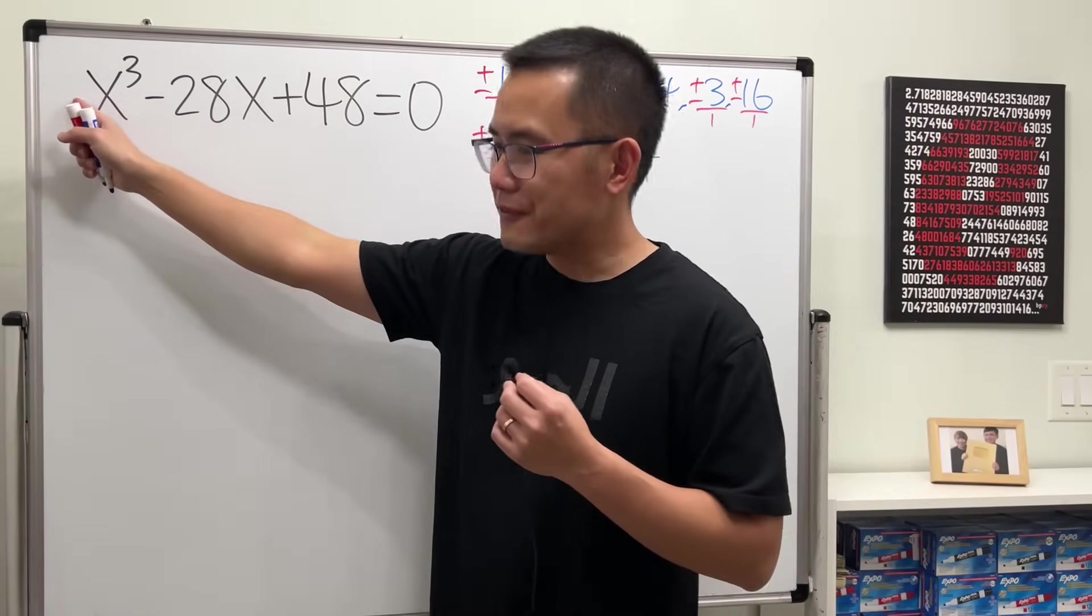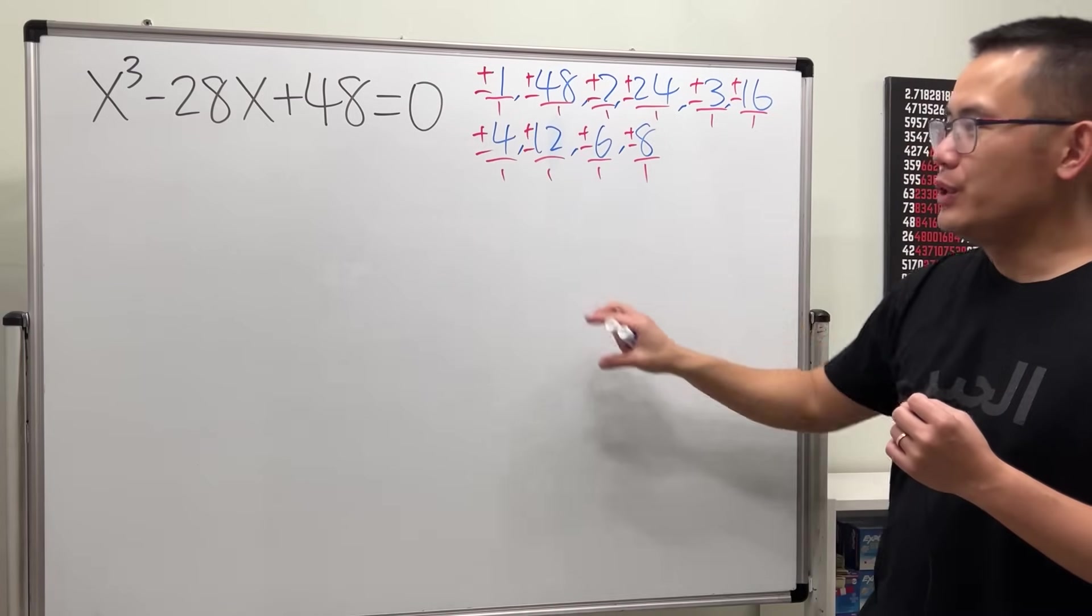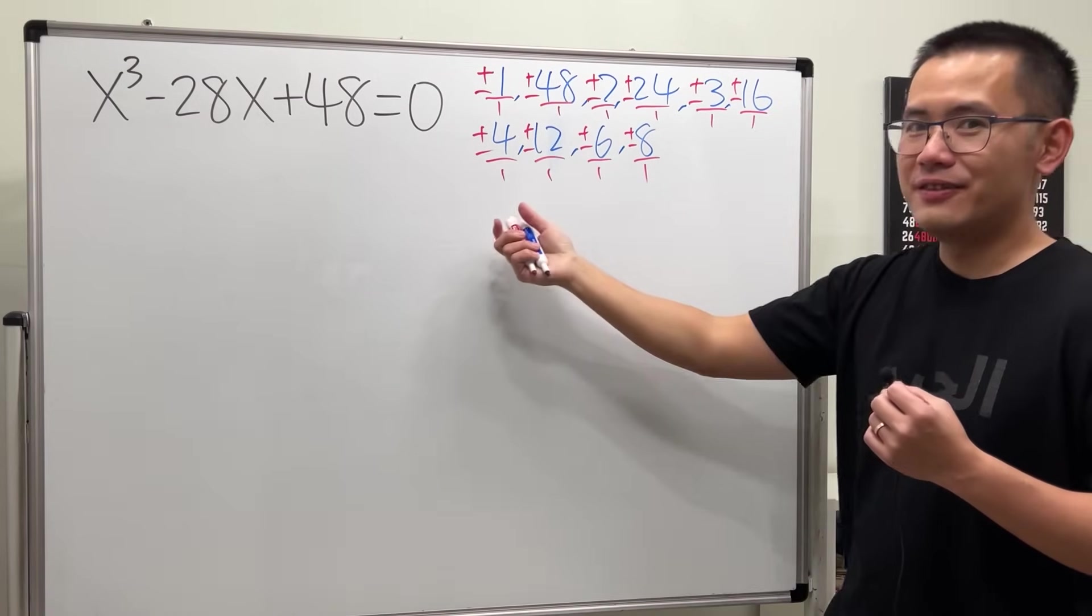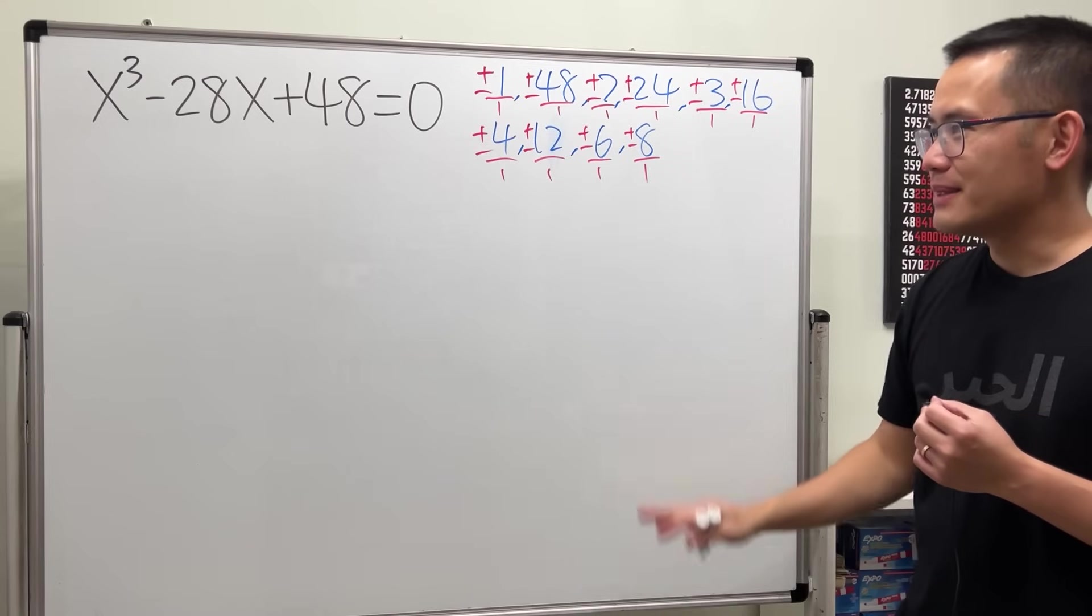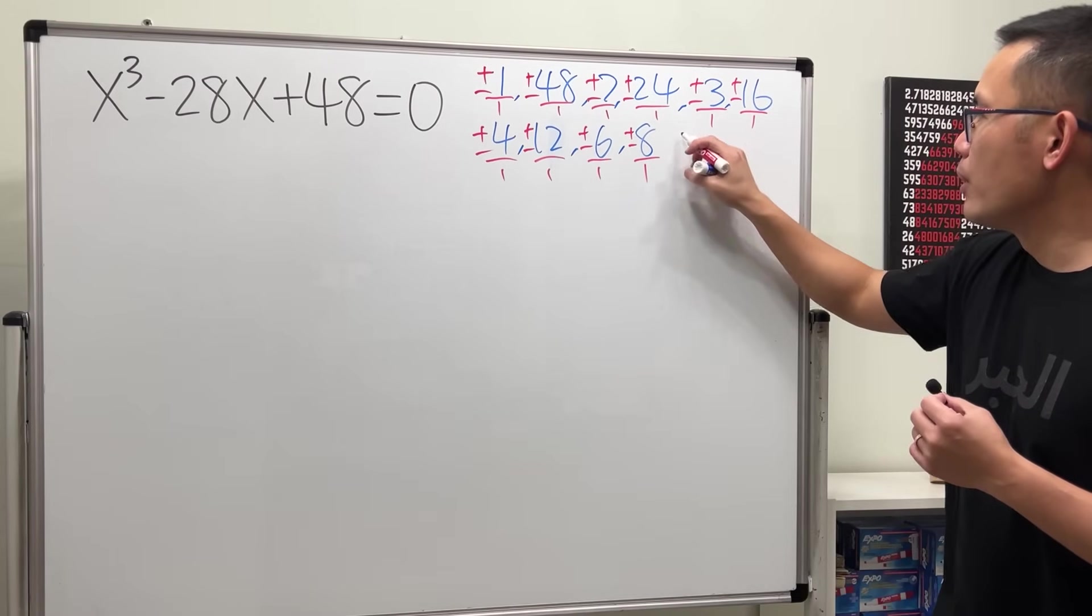Imagine though if you have a five here, not only have to divide it by the ones, you also have to write it down and divide by fives. But yeah, this is it. So these right here are all the possible...